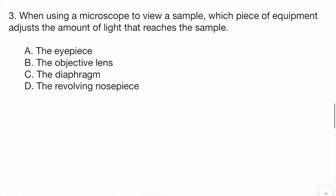Question 3. When using a microscope to view a sample, which piece of equipment adjusts the amount of light that reaches the sample? A: the eyepiece. B: the objective lens. C: the diaphragm. Or D: the revolving nosepiece?